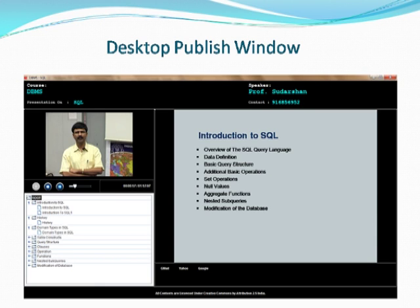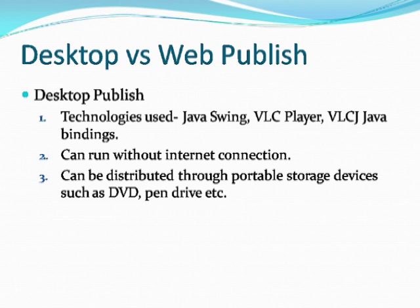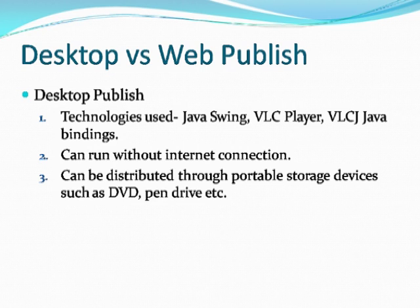Now we are concentrating on desktop versus web publish. Desktop, as I told, is already published; web publish we are going to do in one month. What are the advantages of desktop publish? The technologies used in desktop publish are Java Swing, VLC player, VLCJ, and Java bindings. These technologies were used so that it runs on all PCs, in all web browsers, and on all platforms — whether Ubuntu, XP, or Windows 7. The main advantage is that those who do not have an internet connection can view it as a desktop application, meaning we don't need an internet connection for it.